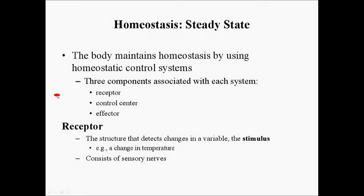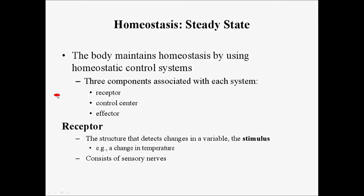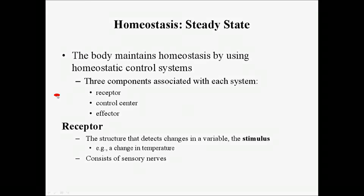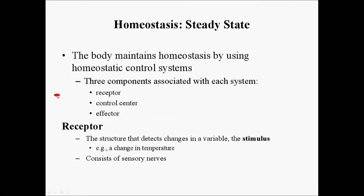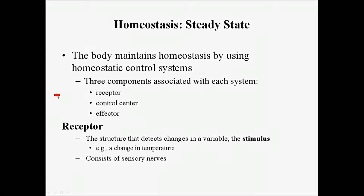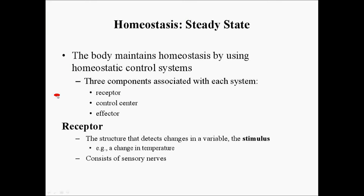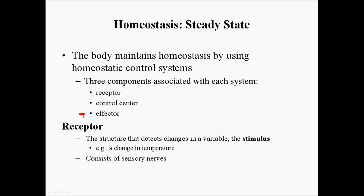The body maintains homeostasis by using control systems. These control systems have three components: the first is the receptor, then the control center, then the effector.